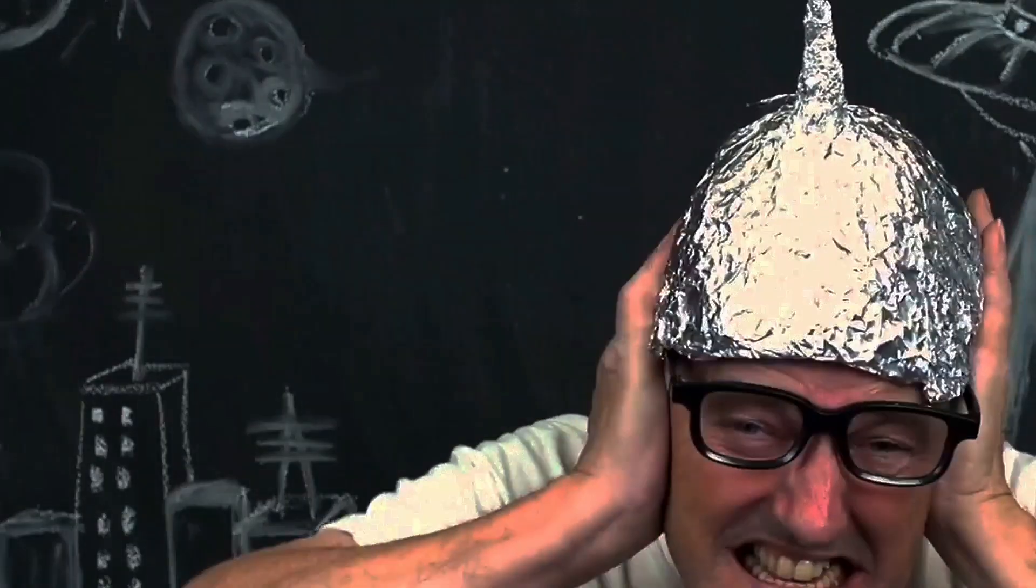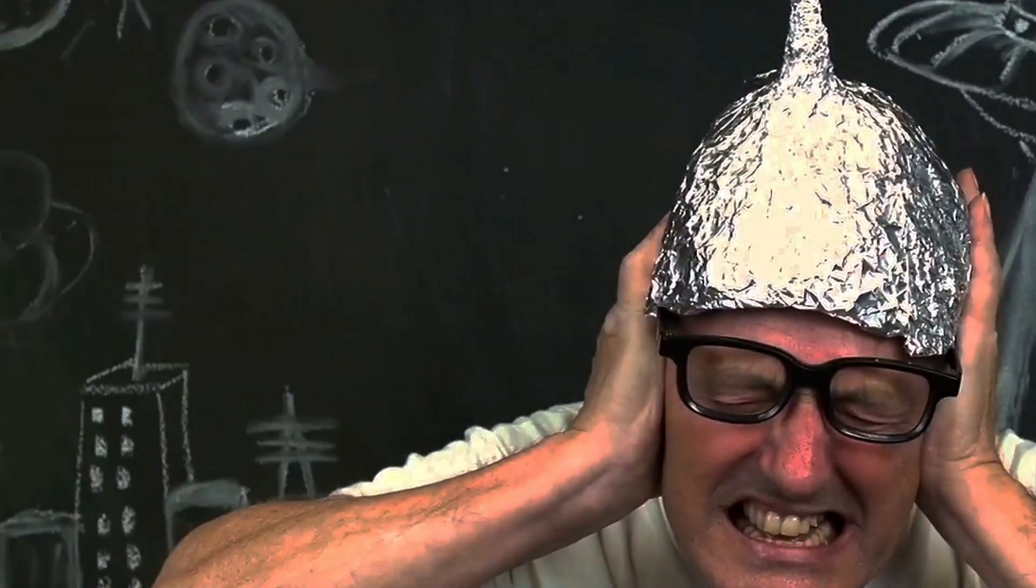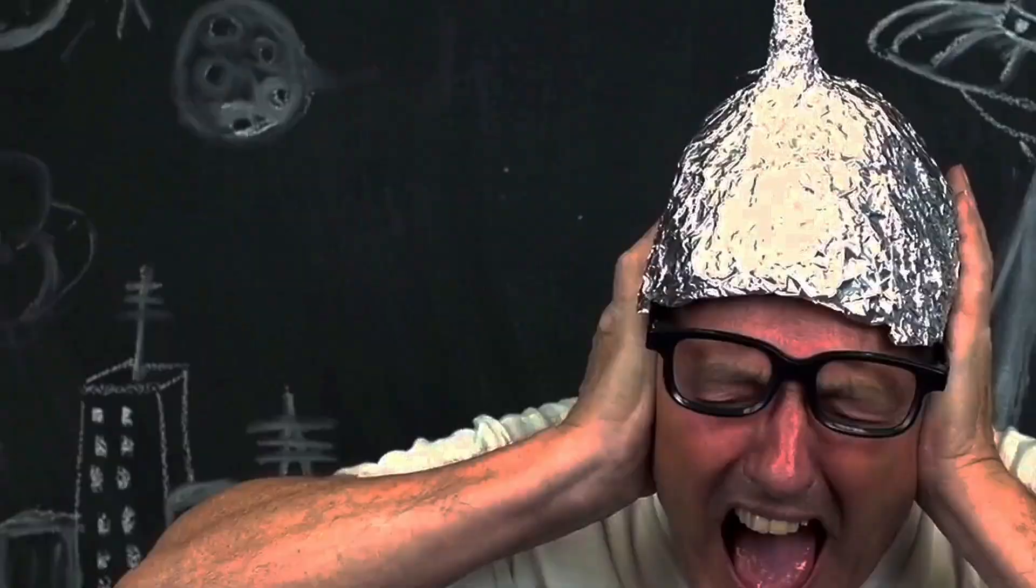Finally, the Phoenix Lights of 1997. Thousands of people in Phoenix, Arizona witnessed a V-shaped formation of lights moving silently across the sky. While the official explanation was military flares, many believe it was a massive UFO.